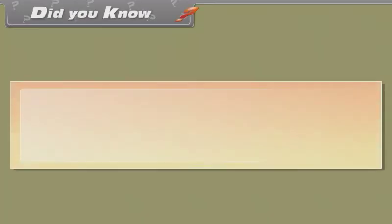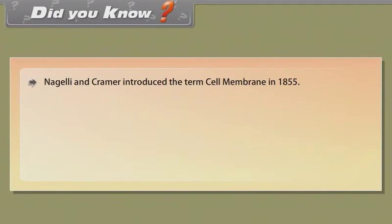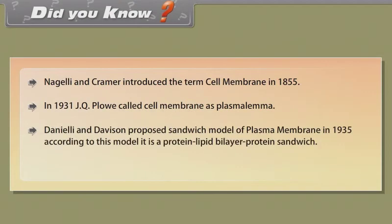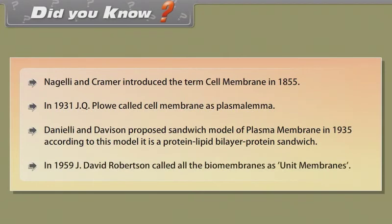Did you know? Nageli and Kramer introduced the term cell membrane in 1855. In 1931, J.Q. Ploway called the cell membrane as plasmalemma. Danielli and Davson proposed the sandwich model of plasma membrane in 1935; according to this model, it is a protein-lipid bilayer-protein sandwich. In 1959, J. David Robertson called all the biomembranes as unit membranes.